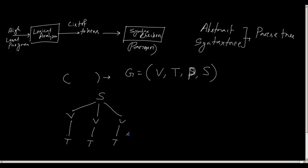In this way, the syntax checker tries to follow the rules of the grammar and create this kind of abstract syntax tree — AST — or parse tree. While creating this abstract syntax tree, the syntax checker follows association rules and precedence rules to remove ambiguity.